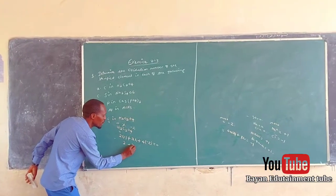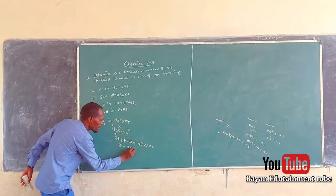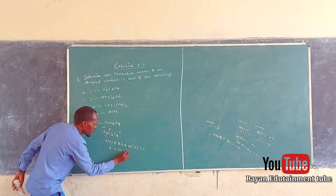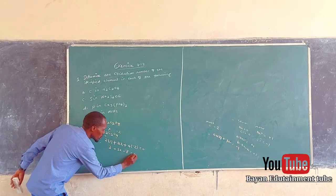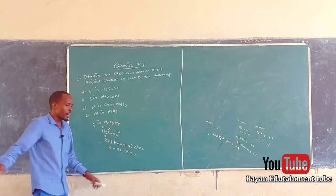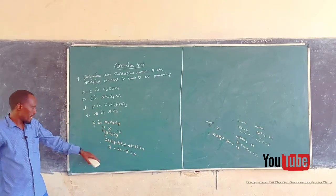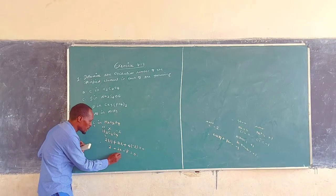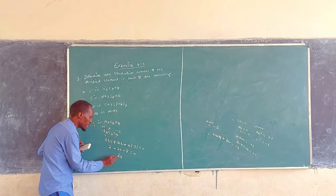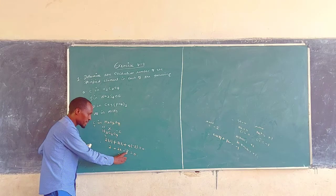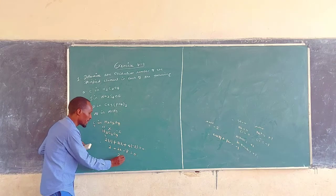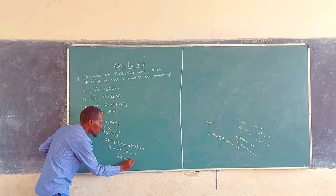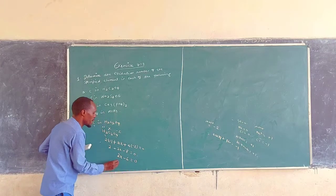So we have two times plus one from hydrogen, plus two times x for carbon, plus four times minus two for oxygen, which must equal zero. That gives us 2 plus 2x minus 8 equals zero, so 2x minus 6 equals zero.